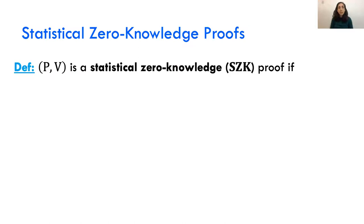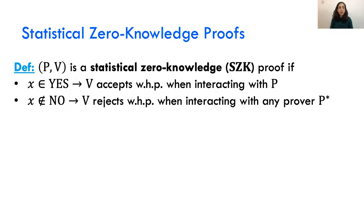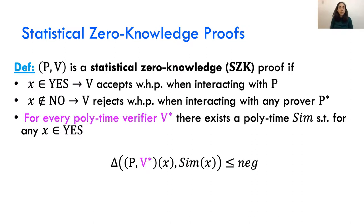A protocol is statistical zero-knowledge if it has three properties: the standard completeness and soundness, where soundness is defined also against an unbounded prover. The zero-knowledge requirement is that for every polytime verifier V-star, there exists a polytime simulator such that the output of the simulator is statistically close to the distribution of the messages sent between P and V-star on input X — meaning the statistical distance between those distributions is negligible.